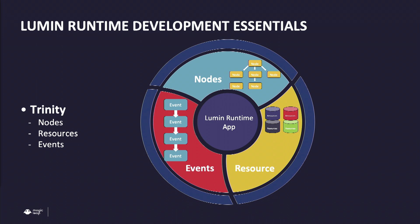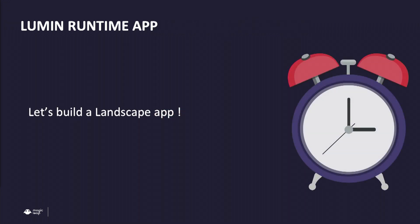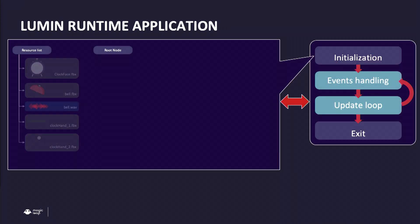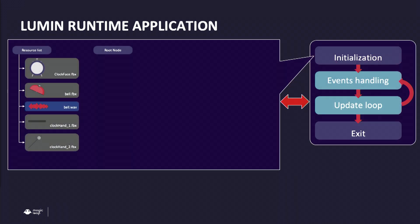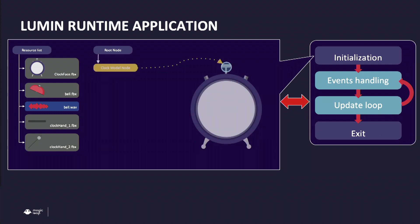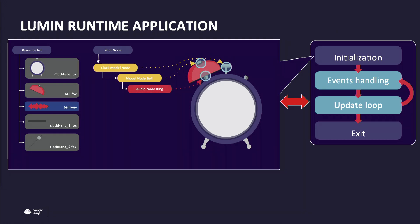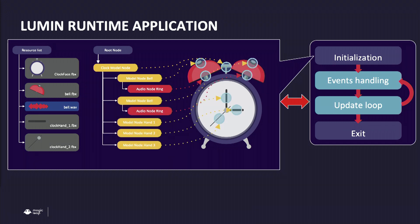There are three essential concepts: nodes, resources, and events. To build a clock app, for example, you'd first build all your resources — assets like your model, a wave file, a couple more models for the clock. Then you have nodes, which are a tree structure — a hierarchical structure. You say, here's a clock model, I'm having a parent-child relationship where I attach a bell to the clock, and audio attached to the bell as well. That's how we build up the scene graph.